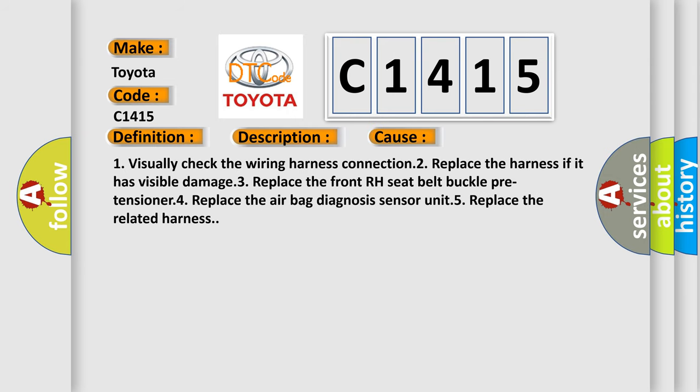This diagnostic error occurs most often in these cases: One, visually check the wiring harness connection. Two, replace the harness if it has visible damage. Three, replace the front RH seat belt buckle pre-tensioner. Four, replace the airbag diagnosis sensor unit. Five, replace the related harness.